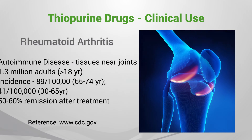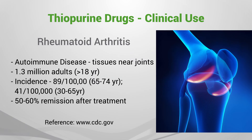Rheumatoid arthritis is an autoimmune disease in which the immune system attacks the tissues around the joints, as well as organs. Thiopurine drugs can induce remission in about 50% to 60% of patients.